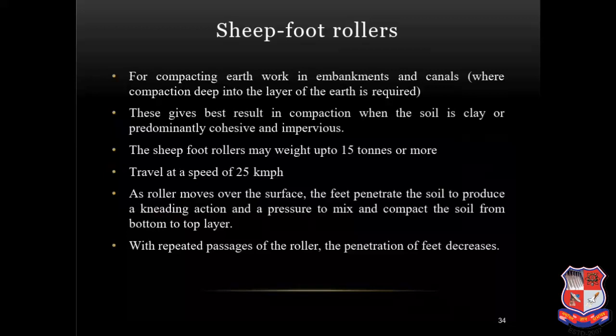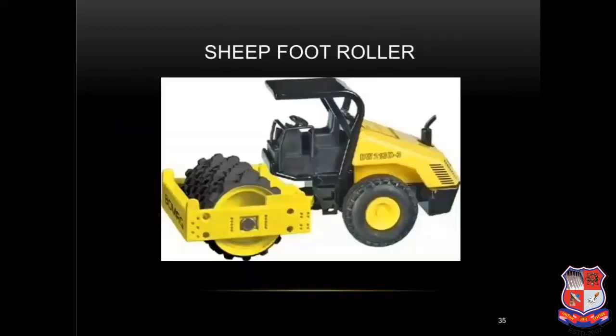Sheep foot rollers are used for compacting earthwork in embankments and canals where compaction deep into the layer of earth is required. They give best results when the soil is clay or predominantly cohesive and impervious. The sheep foot roller may weigh up to 15 tons or more and travel at a speed of 25 km per hour. As the roller moves over the surface, the feet penetrate the soil to produce a kneading action and pressure to compact the soil from bottom to top layer. With repeated passages of the roller, the penetration of the feet decreases.